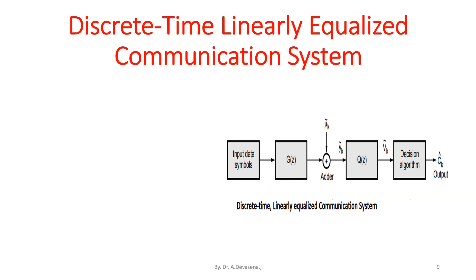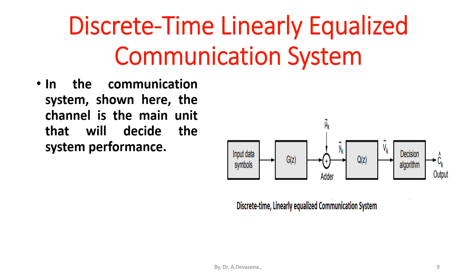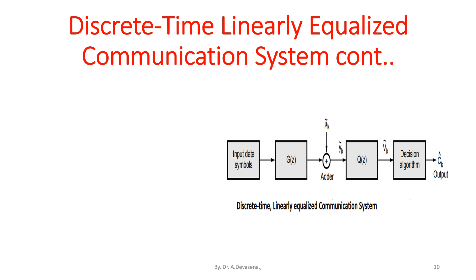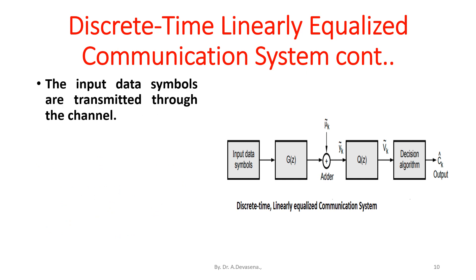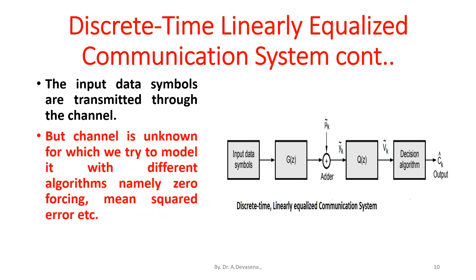A discrete-time linearly equalized communication system representation is shown here. In the communication system, the channel is the main unit that decides system performance. In the mobile environment, the behavior of channels is unpredictable due to multipath signals. The input data symbols are transmitted through the channel, which is unknown, so we try to model it with different algorithms, namely zero-forcing, mean squared error, etc.